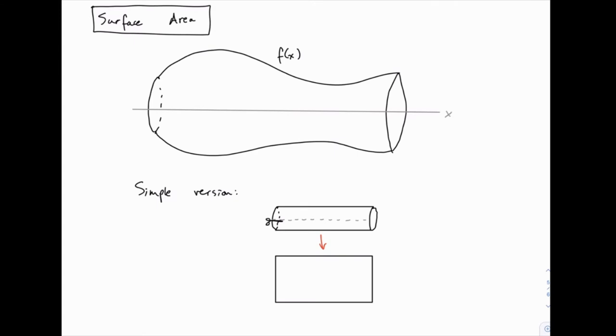If we unroll this cardboard tube, we get a rectangular sheet like this one. And if we know the area of this sheet, that's the same area as the surface of this tube.